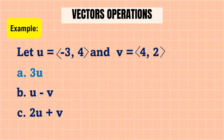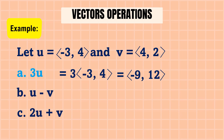First, we solve 3u: 3 times the component (−3, 4). Distributing: 3 × (−3) = −9, and 3 × 4 = 12. So 3u = (−9, 12).